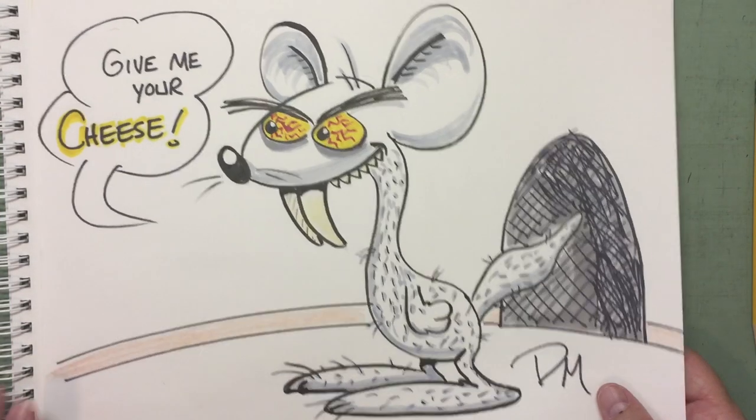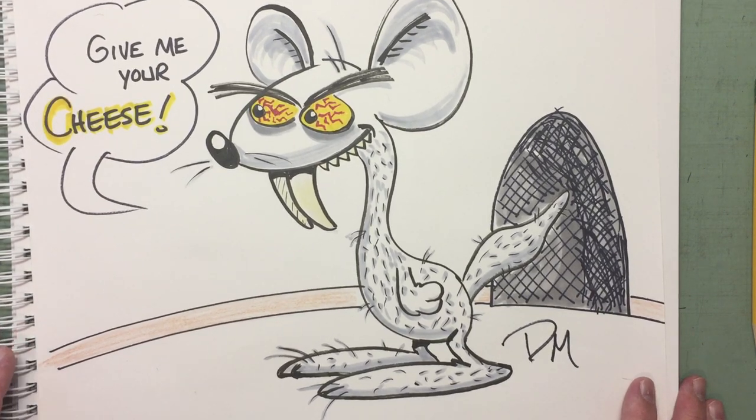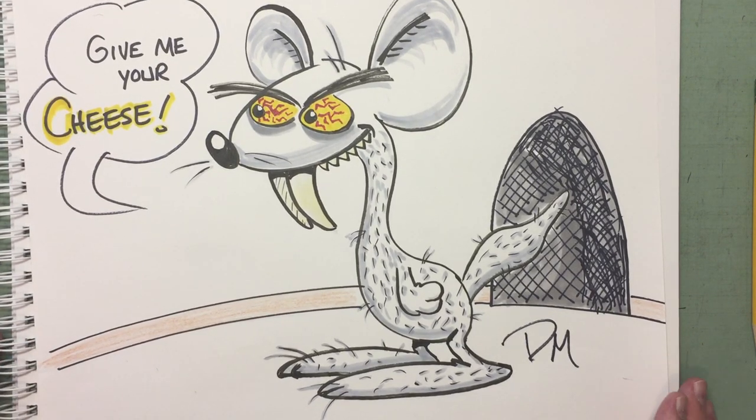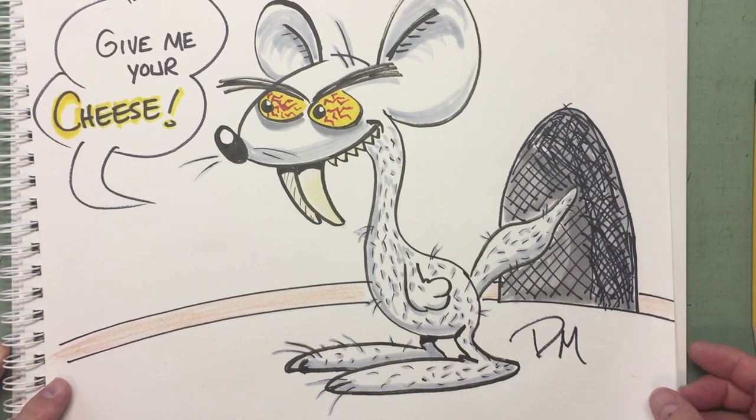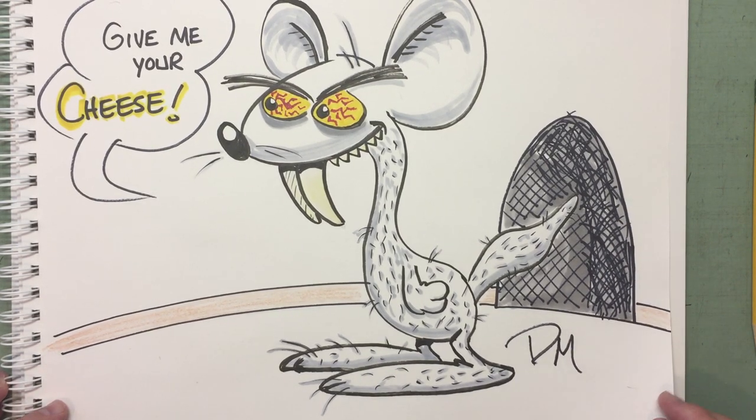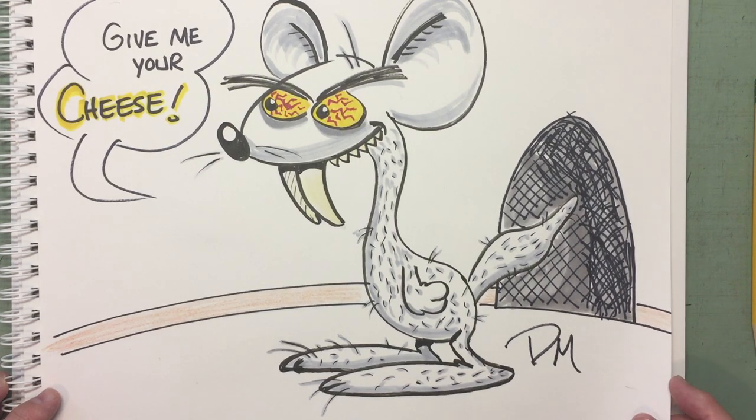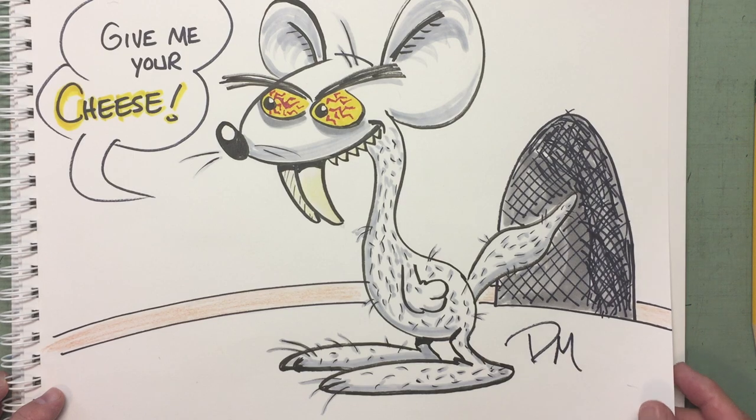If you might be frightened of the red-eyed saber-tooth weasel mouse, you might want to close your eyes because he's frightening. 'Give me your cheese,' he says. He looks awful, like he just woke up. He's got bags under his eyes. The red-eyed saber-tooth weasel mouse, a scruffy little combination character, a mash-up that loves cheese.